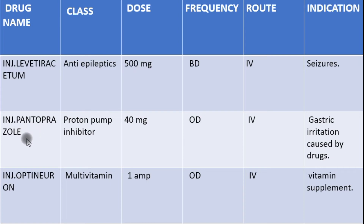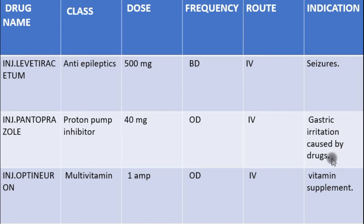Injection Pantoprazole 40mg once daily — it is a proton pump inhibitor which inhibits the proton pump present in the gastric parietal cells. It is used to treat gastric irritation caused by other drugs. Injection Optineuron is a multivitamin given as a vitamin supplement.